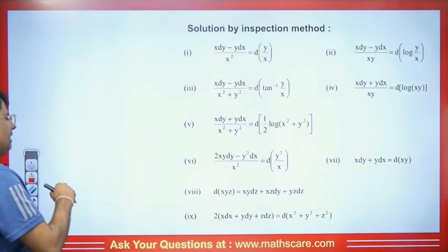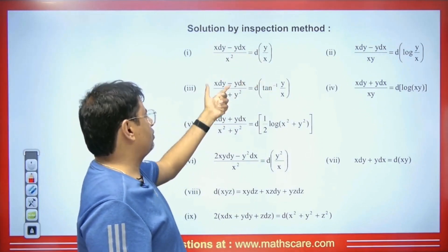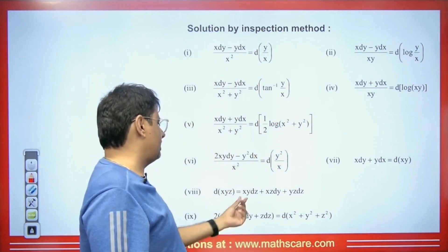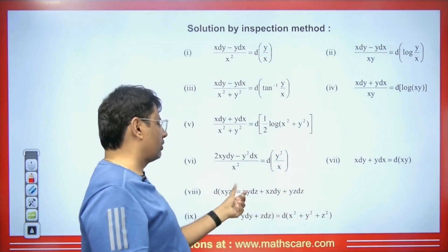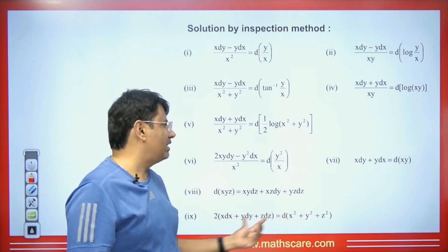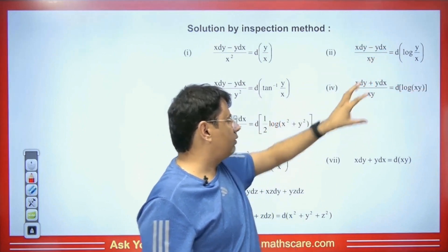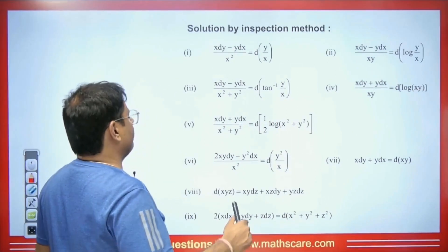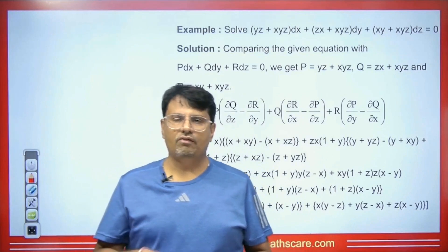The first method is the inspection method. You must have studied in 12th class: x dy minus y dx upon x squared equals d(y/x), and the differentiation of tan inverse(y/x) is this. You have specific formulas to remember — like x·y·z: if you differentiate d(xyz), you get yz dx + xz dy + xy dz. If we differentiate x² + y² + z², we get 2x dx + 2y dy + 2z dz. There are formulas for log(y/x) and log(xy) as well. These formulas help you directly apply them to solve questions.